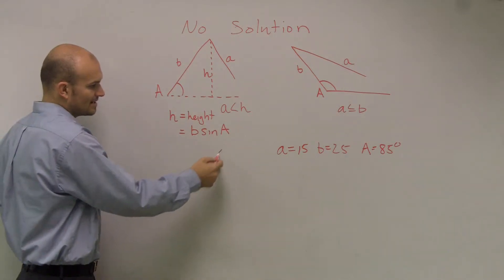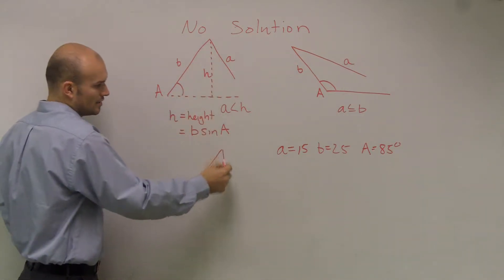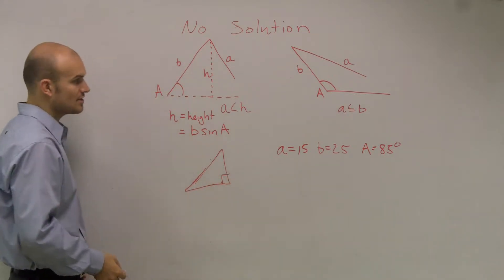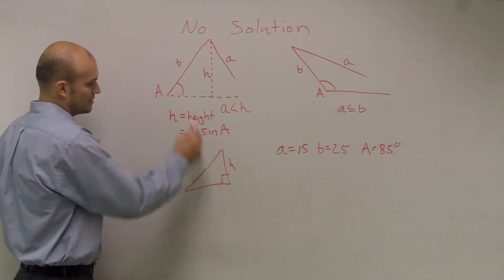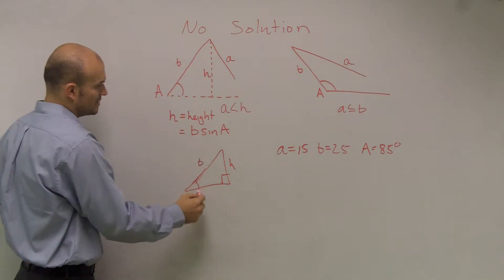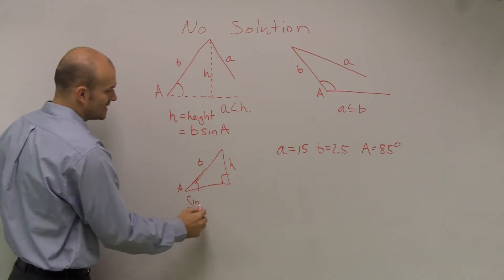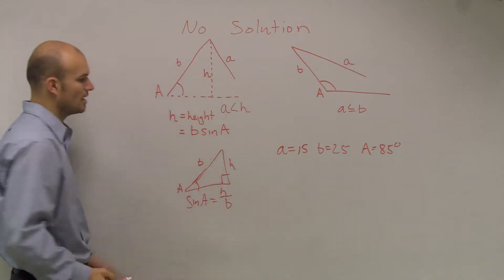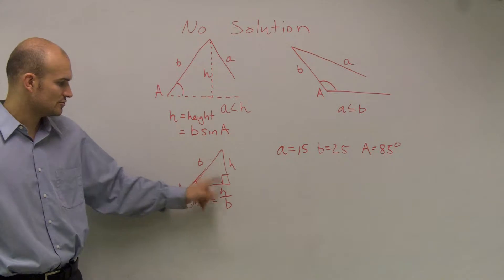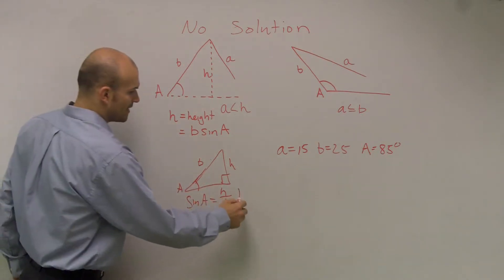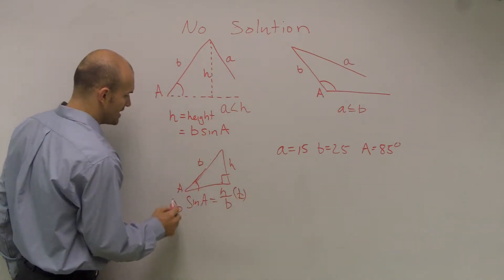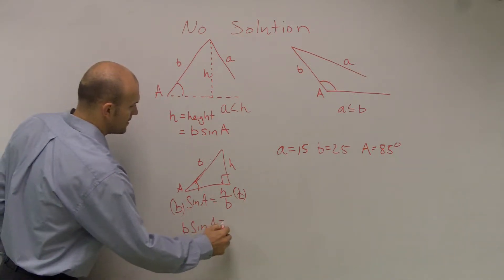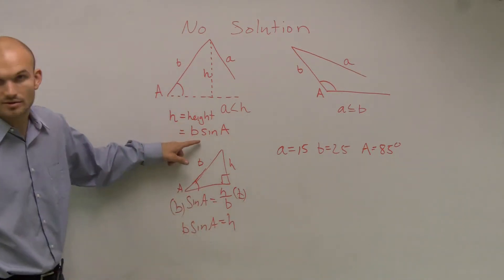And the reason, like I said, that we got that is, remember, if you're drawing height, you're going to be drawing a right triangle. The height would be H. Here would be B, and then here's your theta, which is A. So you could say sine of A equals your height over your hypotenuse, your opposite over your hypotenuse. So it would be H over B. To solve for H, I'd multiply by B on both sides. So you have B times sine of A equals H, which I have up there.